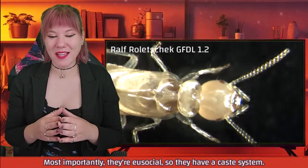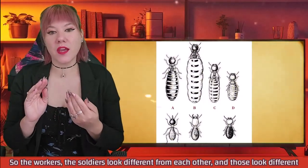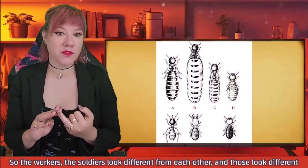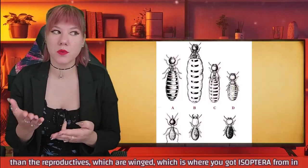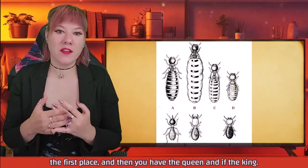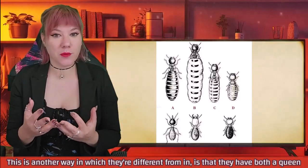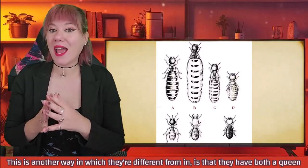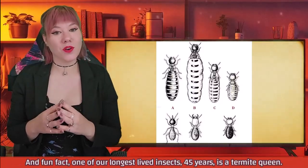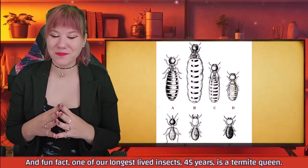Most importantly, they're eusocial, so they have a caste system. The workers and soldiers look different from each other, and those look different from the reproductives, which are winged — which is where you got Isoptera from in the first place. And then you have the queen and the king. This is another way in which they differ from ants: they have both a queen and a king living inside the termite mound. And fun fact — one of our longest-lived insects, 45 years, is a termite queen.